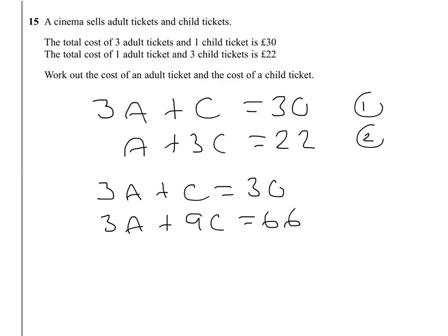So I've got one new simultaneous equation. Well, one new equation that I can work with my first equation to solve by elimination. So I'm now going to subtract, and I'm going to subtract this way. I'm going to take the top equation away from the bottom. So 3A subtract 3A gets rid of the A's. 9C subtract C gives me 8C. And 66 subtract 30 gives me 36.